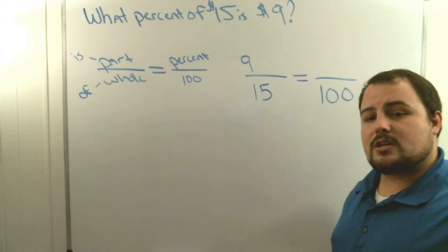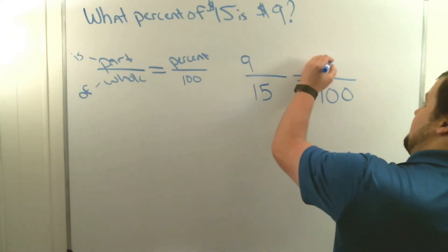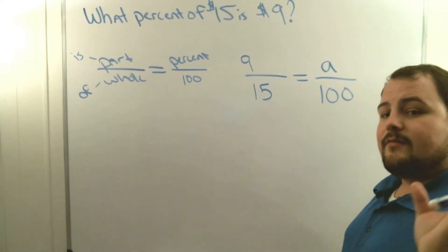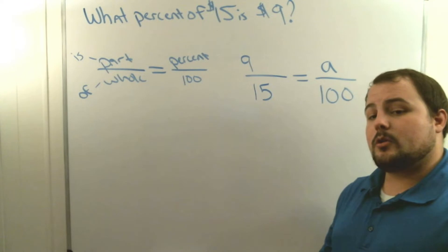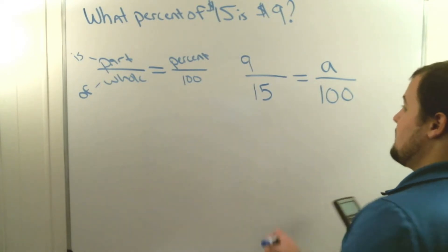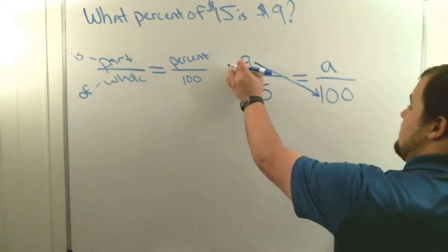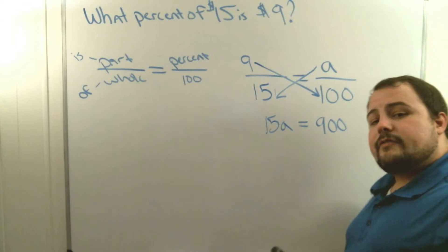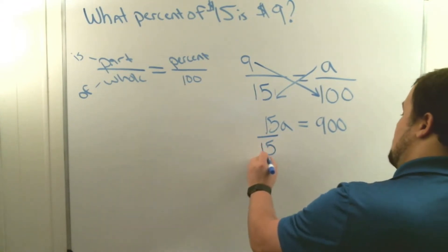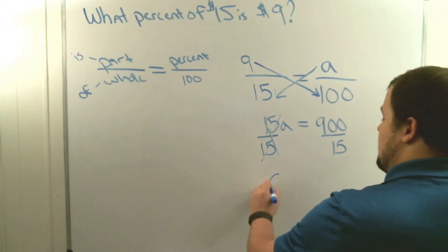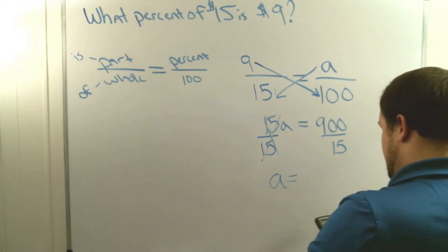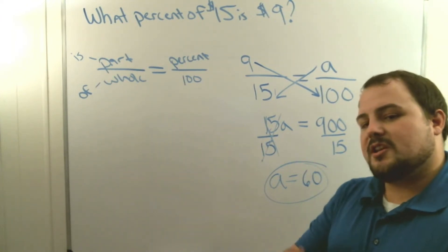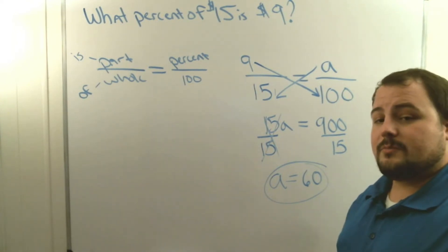We don't know the percent, so we put a variable — I'll use the letter 'a' — in that spot. You can use any variable you want. After we have it set up, we cross multiply: 9 times 100 is 900, and a times 15 is 15a. Then we divide both sides by 15. We get a equals 900 divided by 15, which is 60. So if you had nine dollars out of fifteen dollars, you have sixty percent of the amount you need.